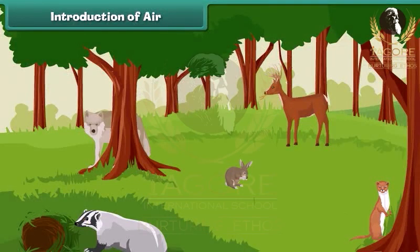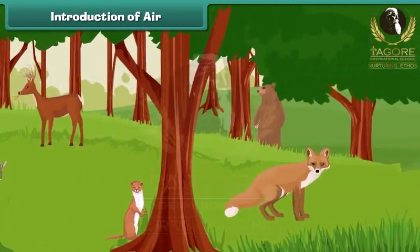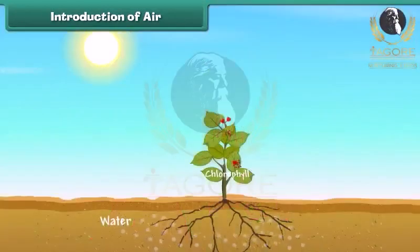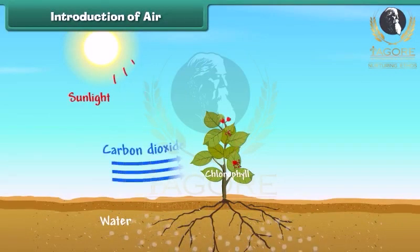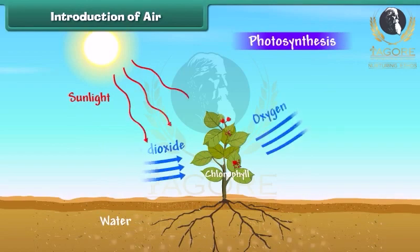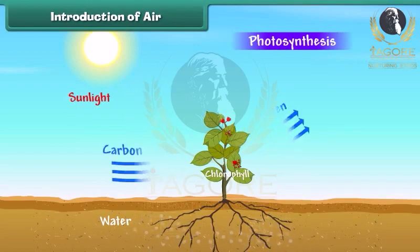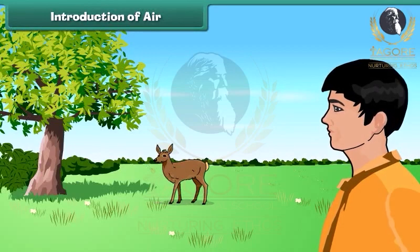Air is very important for almost all life on earth including plants and animals. Plants need carbon dioxide from air to do photosynthesis and release oxygen into the air. Human beings and animals need to breathe air to get the oxygen they need to survive.